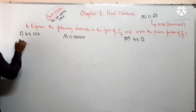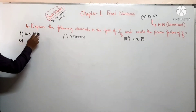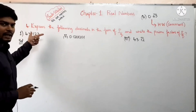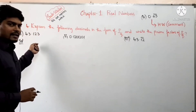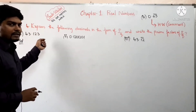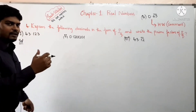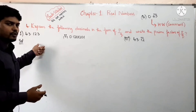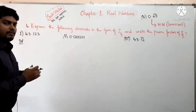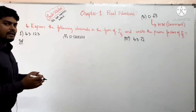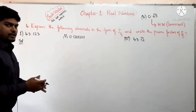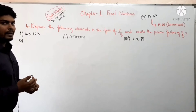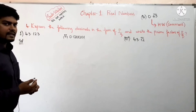43.123 — यहाँ पर कोई bar नहीं है और decimal के बाद कोई number repeat हो रहा नहीं दिख रहा। तो इसको without any further process सीधे p by q form में convert करेंगे।